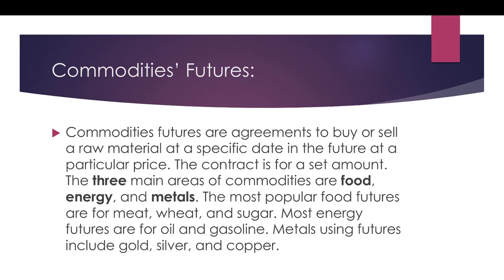Commodities futures are agreements to buy or sell a raw material at a specific date in the future at a particular price. The contract is for a set amount. The three main areas of commodities are food, energy, and metals. The most popular food futures are meat, wheat, and sugar — items such as lean hog, soybean, and corn. That's what we're used to in the food segment.